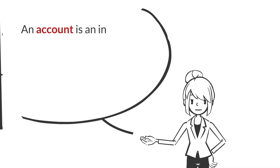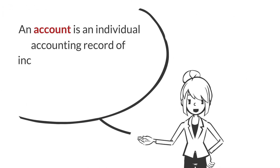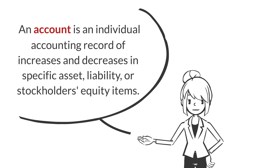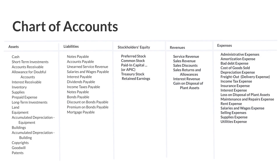An account is an individual accounting record of increases and decreases in a specific asset, liability, or stockholders' equity item. Companies could have an account for each account listed on the chart of accounts — for example, they would have a separate account for cash, accounts receivable, equipment, accounts payable, service revenue, salary and wages expenses, and so on.